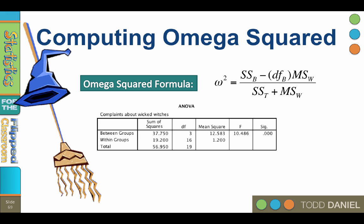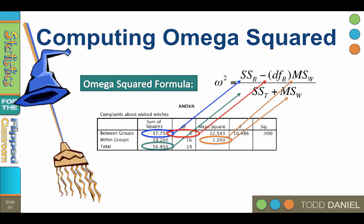We begin with the sum of squares between, which plugs into the formula, minus the degrees of freedom between times the mean square within, which also plugs in two places in the formula. Finally, we plug in the sum of squares total, and we have all of the numbers.